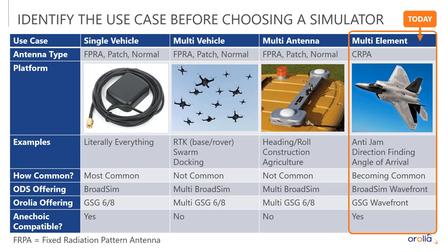The focus of today is the multi-element use case. Typically we refer to these antennas as SERPA antennas. We're usually talking about anti-jam, direction finding, or angle of arrival applications. These systems are becoming more common — the amount of SERPAs on the market is increasing and we think we're going to start seeing more commercial applications going forward. We do offer BroadSim Wavefront and GSG Wavefront, which are simulators that can fully support this use case, and these type of antennas are compatible with anechoic chambers.